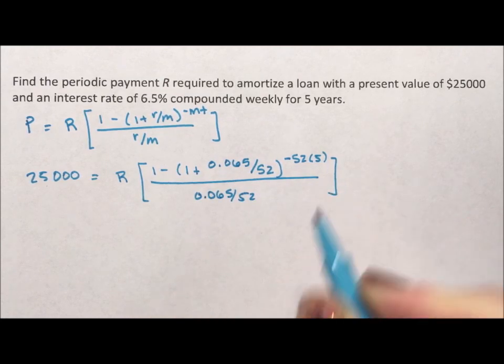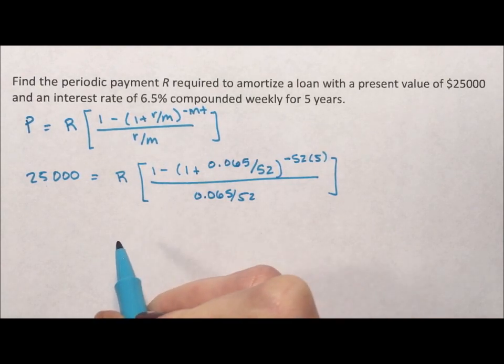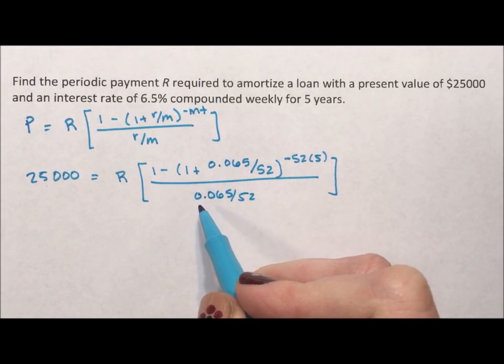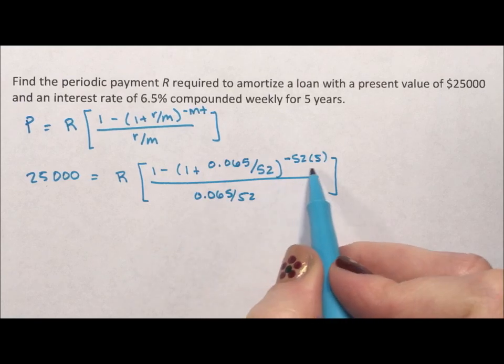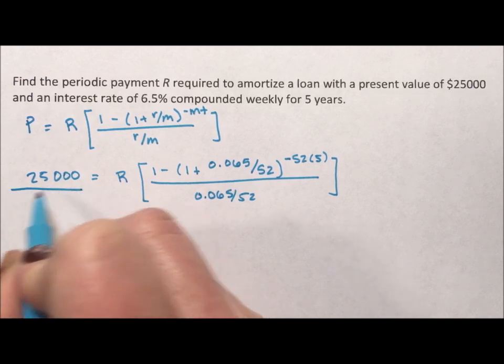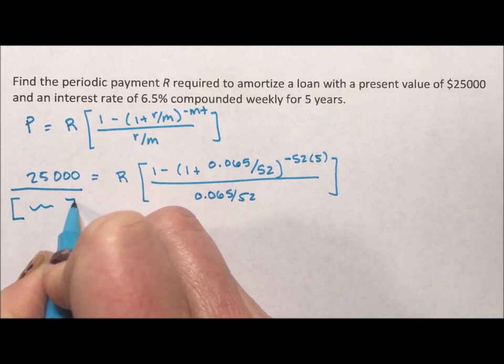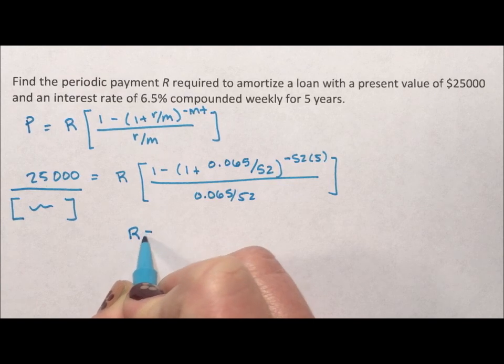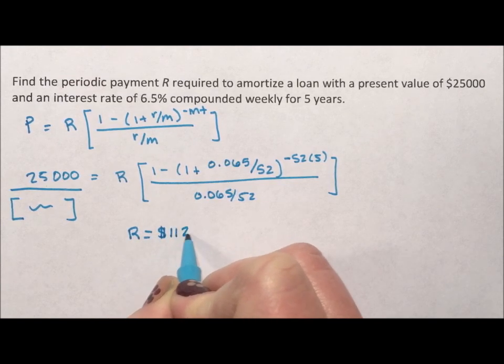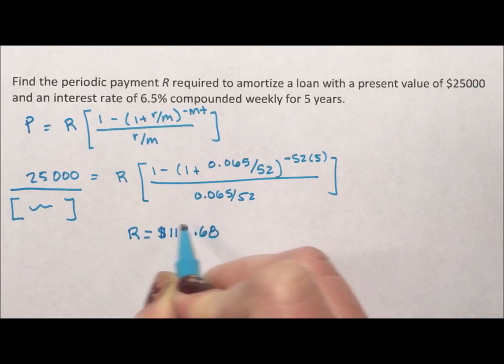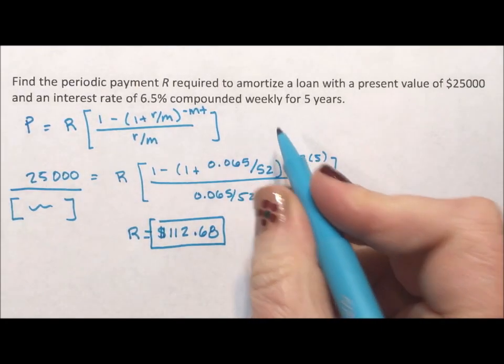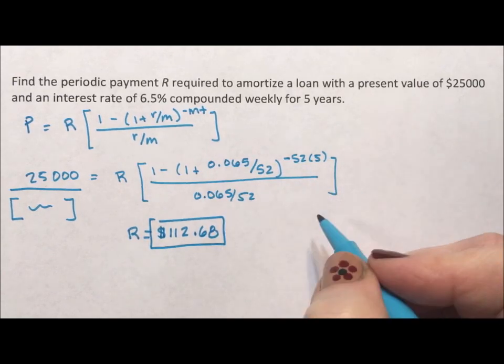Make sure you practice plugging these into your calculator because with all of these parentheses and these negatives, there are so many pitfalls. Probably you're going to make your mistake up in the exponent. Let's see, we take the 25,000 and we divide by everything in this bracket and we get that R is equal to $112.68 for a week to get to that amount.